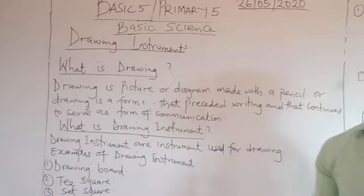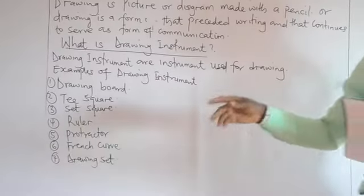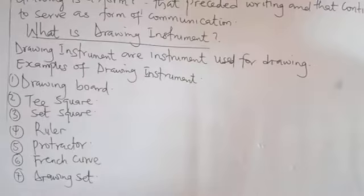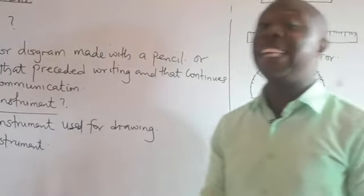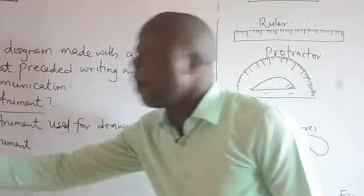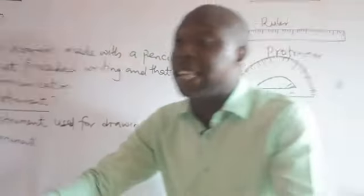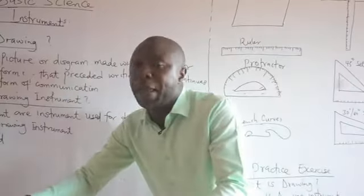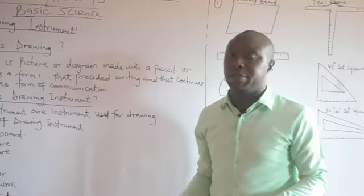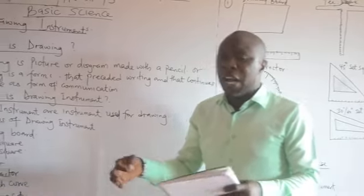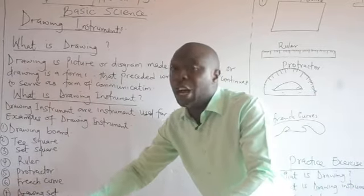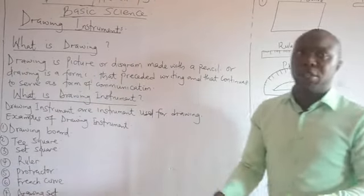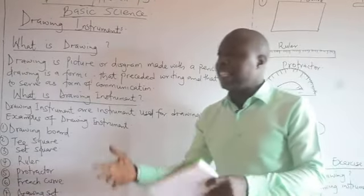What do you understand by the term drawing board? A drawing board is a flat wooden board with a smooth, rigid surface on which drawing paper is placed. It is on top of this drawing board that we place a drawing paper when we want to carry out drawing.